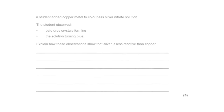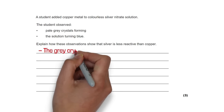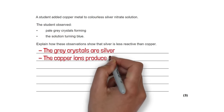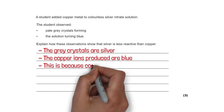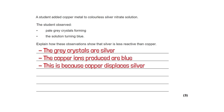A student added copper metal to a colourless silver nitrate solution. Observations included pale grey crystals forming and the solution turning blue. The grey crystals are silver and the copper ions produced are blue. This shows copper displaces silver, which means silver is less reactive than copper.